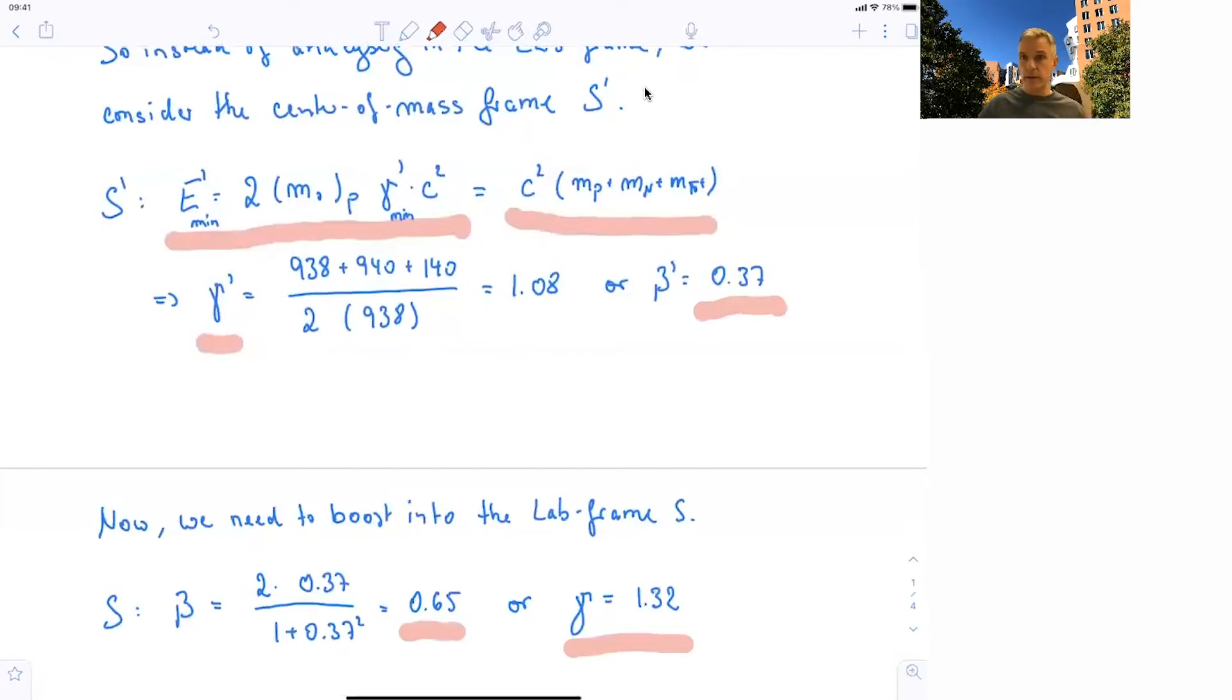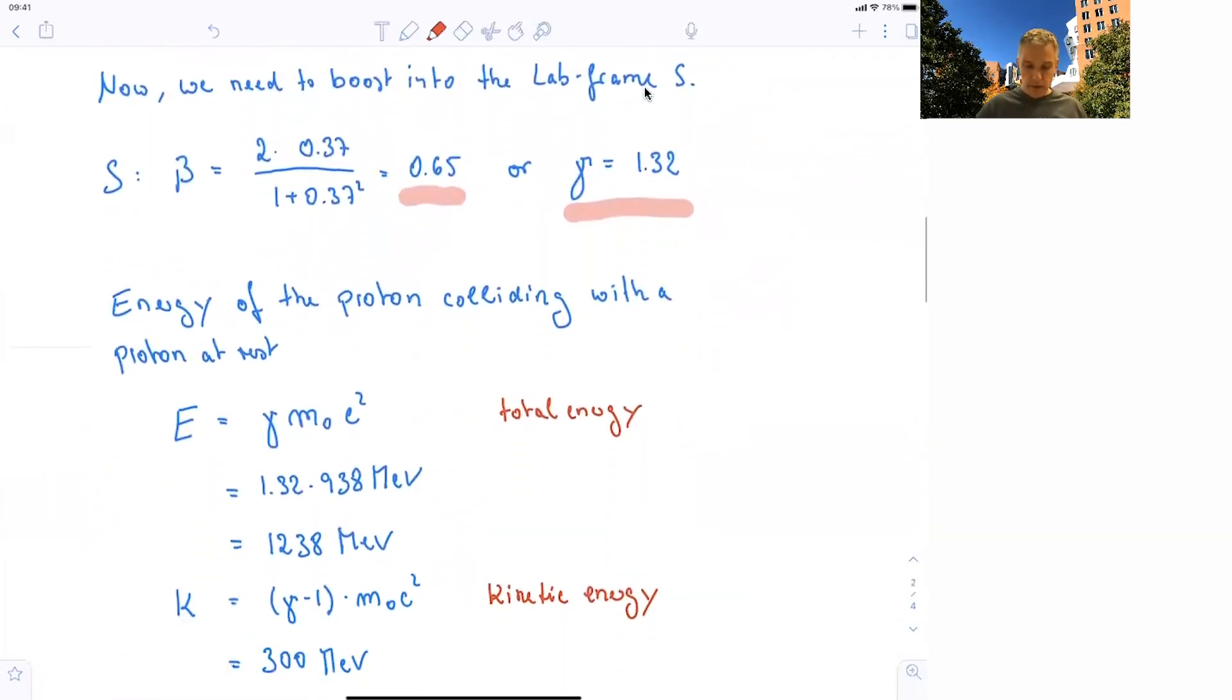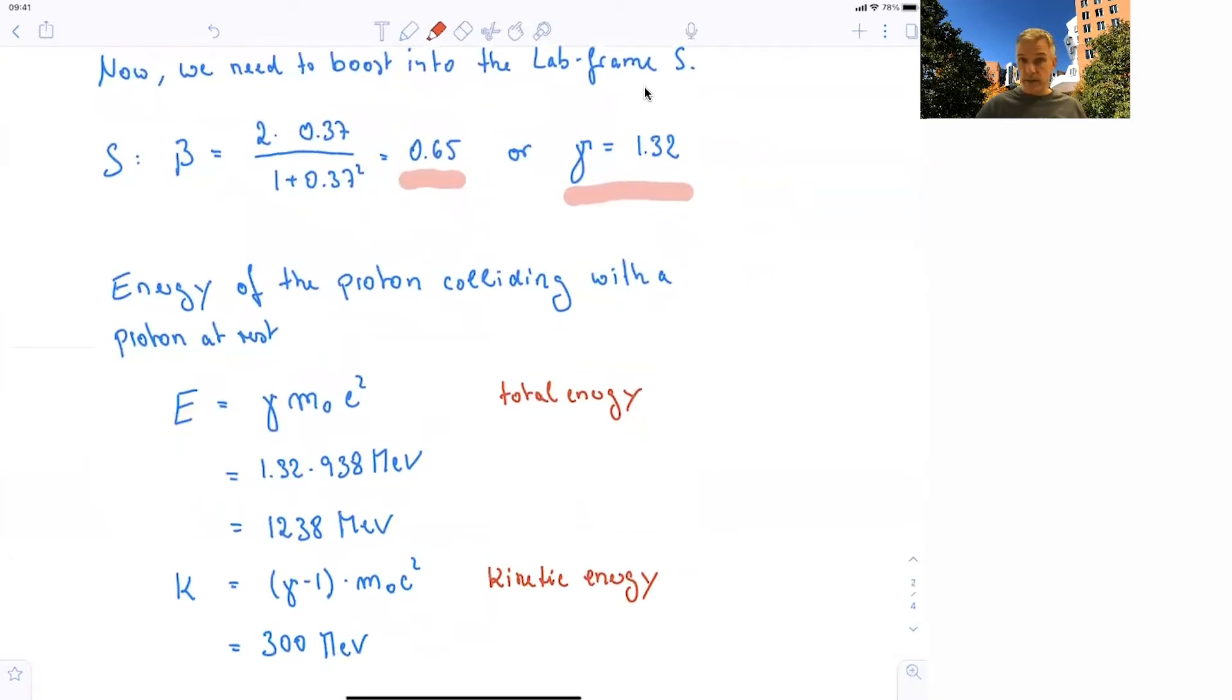That velocity we can then take and calculate the gamma factor of the proton in the fixed target experiment. All right, so we analyze the situation in the center of mass frame, and then did a Lorentz transformation by just looking at the velocity into the fixed target frame. So this means now numerically that the proton colliding with the proton at rest has a total energy of gamma m0 c squared, which is 1.32 times 938 MeV. And so that results in 1.238 GeV. But we're interested in the kinetic energy. So the kinetic energy here is given by gamma minus 1 m0 c squared, which is 300 MeV. So we have to accelerate a proton to 300 MeV in order to be able to have this process to occur.